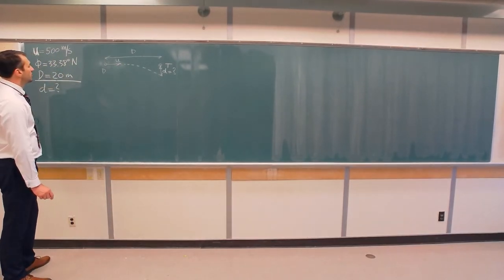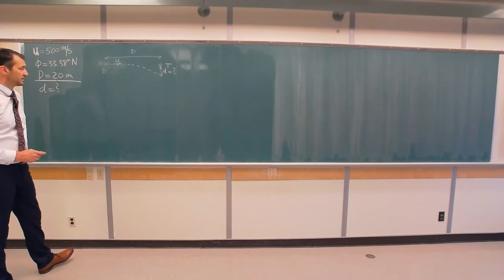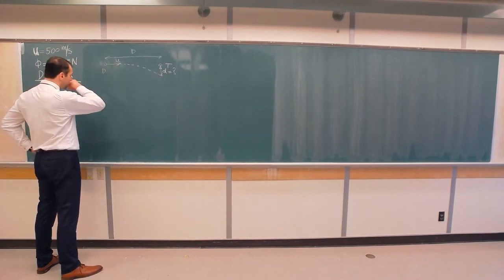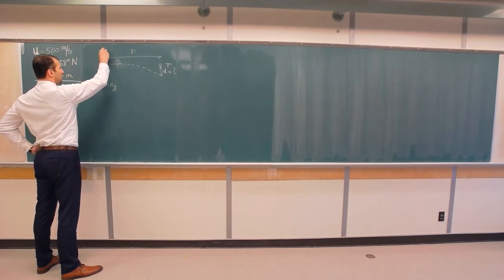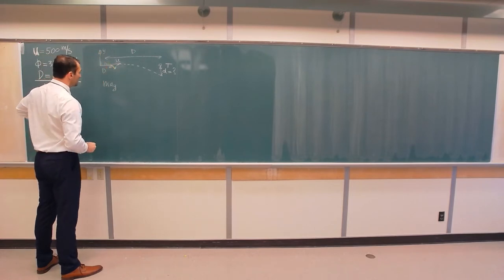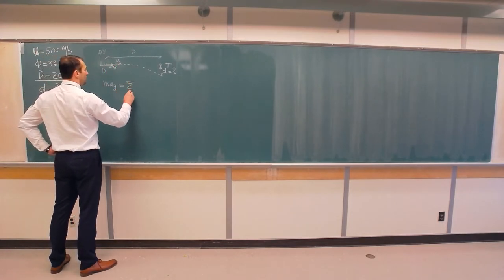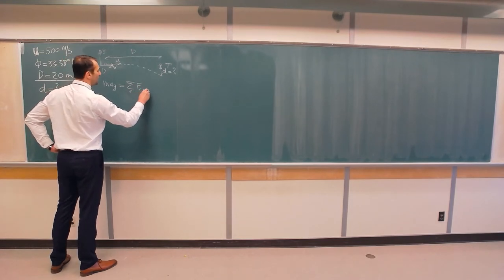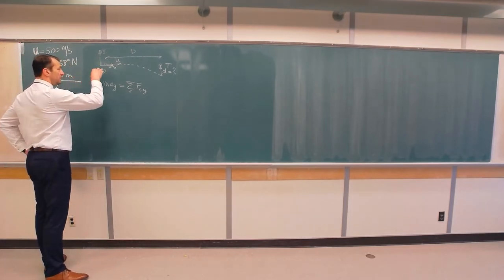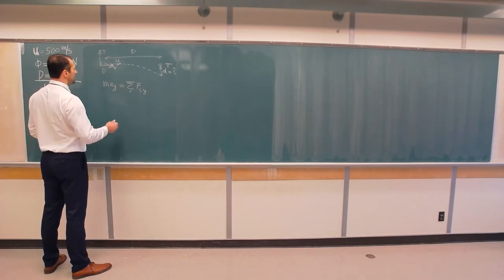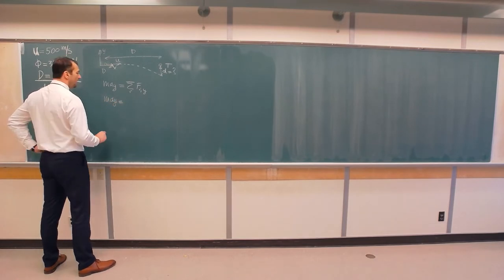Well this is really not that difficult because we can write the second Newton's law for this bullet, neglecting air resistance. So we have that mass times acceleration in the y direction—so let's say this is y direction and this is x direction, so deviation will be in the y direction—is equal to the sum of all forces in the y direction. Well, the only force in the y direction here is the Coriolis force, because gravity is acting in the vertical direction, there is no air resistance and there is nothing else. So mass of the bullet times acceleration in the y direction is equal...